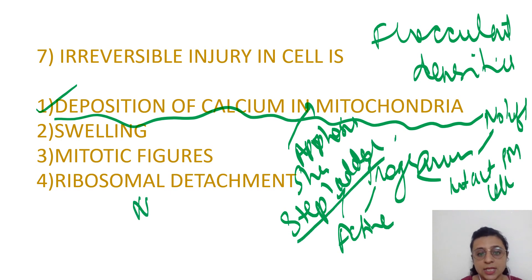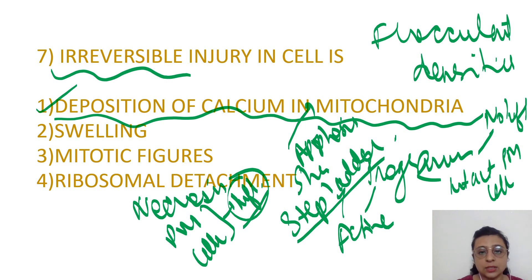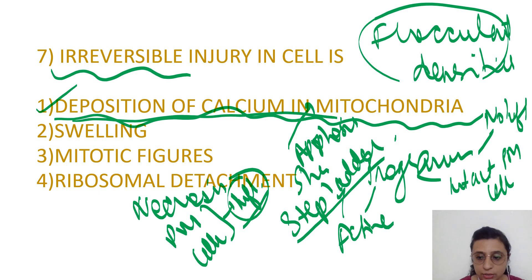Whereas in necrosis, there is destruction of the plasma membrane and leakage of cellular contents, thus inflammatory reaction occurs. Irreversible injury is indicated by flocculent densities — the deposition of calcium in the mitochondria.